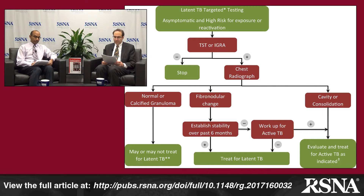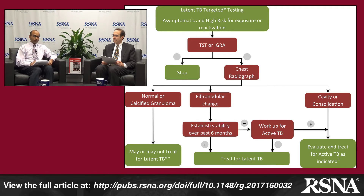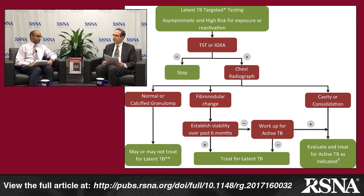The second leg is fibronodular changes. It's important to recognize these on radiograph — sometimes patients have biapical scarring that's minimal and symmetric, often attributed to ischemic changes. But if we detect asymmetry, more scarring on one side, or other evidence like hilar retraction and traction bronchiectasis, we should consider the possibility of inactive TB presenting with fibronodular changes. Once detected, we decide whether it's stable. If we have a comparison chest radiograph showing stability for six months, those patients are treated for latent TB with single-drug therapy.